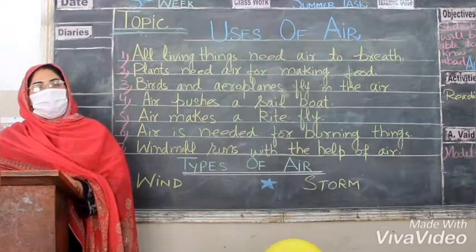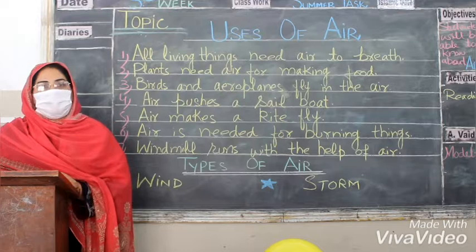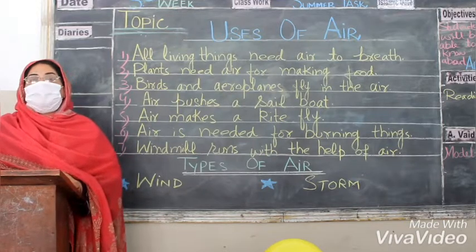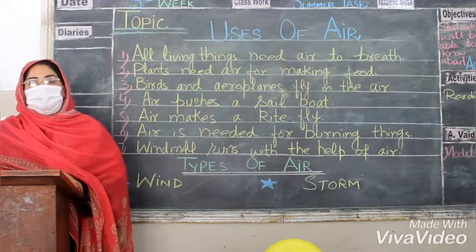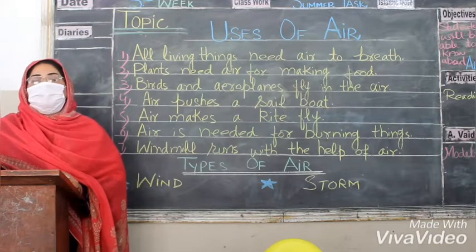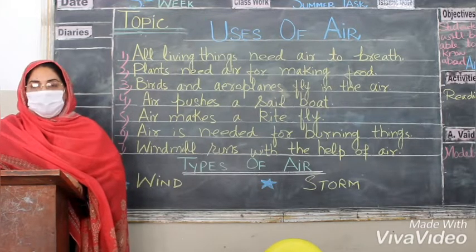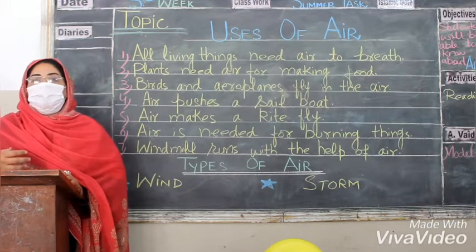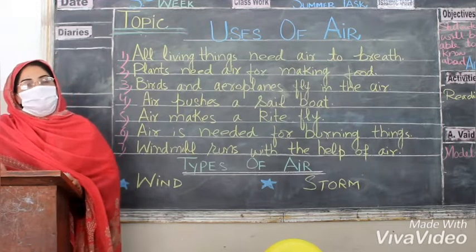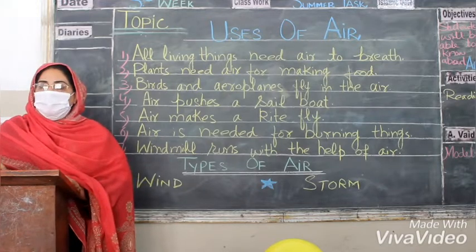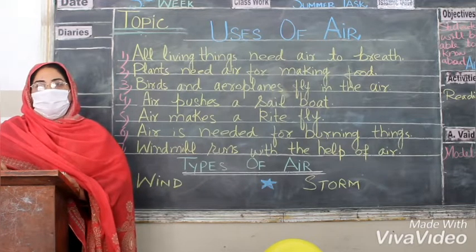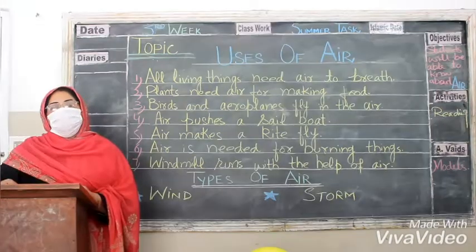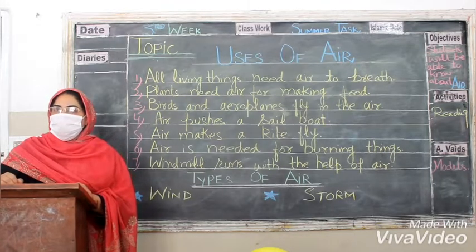In this week we will read about the uses of air, but first I will tell you about air. Air is all around us; even in the room where you are sitting, air is present. We cannot see air, but we can see it when it moves. There are two types of air: moving air is called wind, and strong air is called a storm.